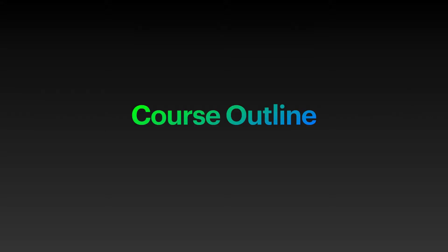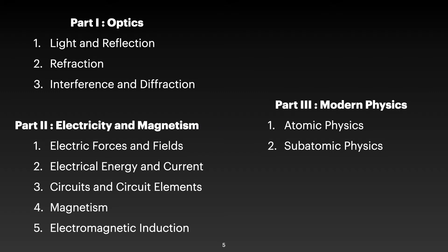In the course outline we divide General Physics 2 into three parts. Part one is optics, where we discuss light and reflection, refraction, interference, and diffraction — basically geometrical optics and physical optics, where light acts as a ray and light acts as a wave.